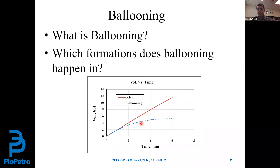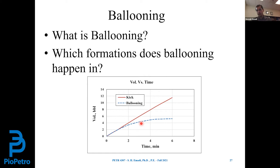Ballooning happens when we are drilling through very low-permeability or impermeable formation and we exceed the fracture propagation pressure. We create induced fractures inside the impermeable formation and mud starts entering those fractures. However, because of the low permeability, leak-off does not happen. When we turn off the pump, bottom-hole pressure drops from dynamic to static, and if static bottom-hole pressure is less than fracture propagation pressure, mud starts coming back to the wellbore — so it acts like a kick is happening.